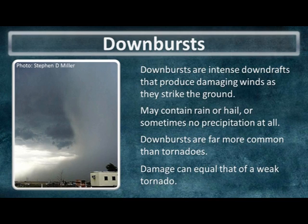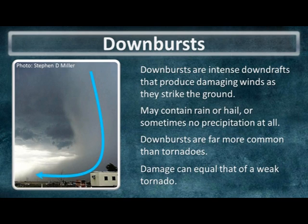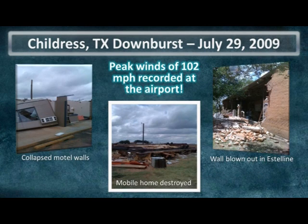In all the previous examples we were located pretty far away from the thunderstorms, but now let's move in closer and focus on severe weather clues occurring below the base of the storm. In this particular photo, the observer is located alongside a thunderstorm, looking at what's known as a downburst. Downbursts are intense downdrafts that produce damaging winds as they strike the ground and have nowhere to go but outwards. They may contain rain or hail, or sometimes be completely void of precipitation altogether. Since downbursts are much more common than tornadoes, it's important to understand that they can produce damage equivalent to that of a weak tornado.